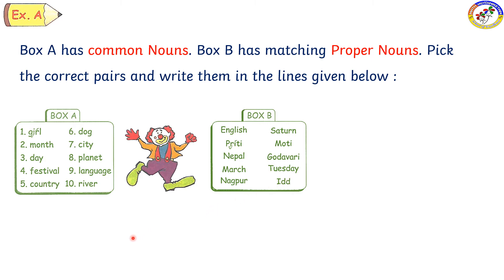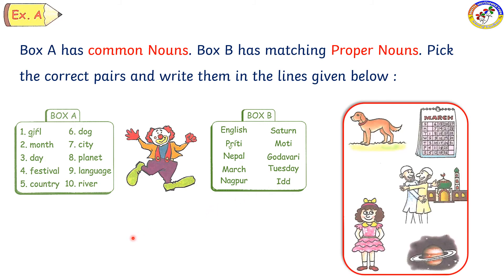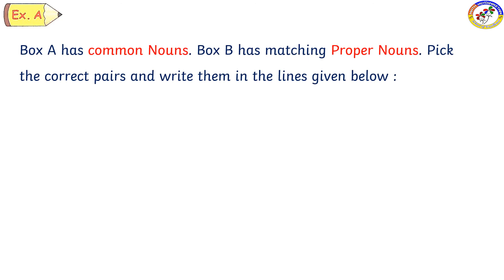Let us see what is the first one. Here comes the pictures. We have to find the girl. So English is not a girl's name. Priti — so what is the answer? Priti. The proper noun for girl is Priti.